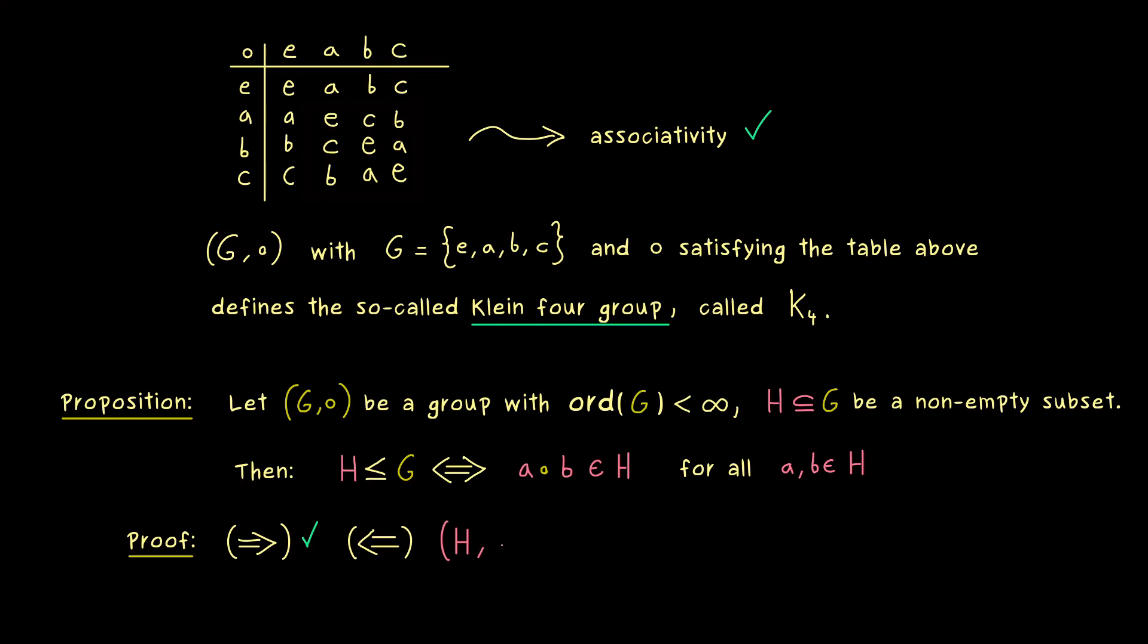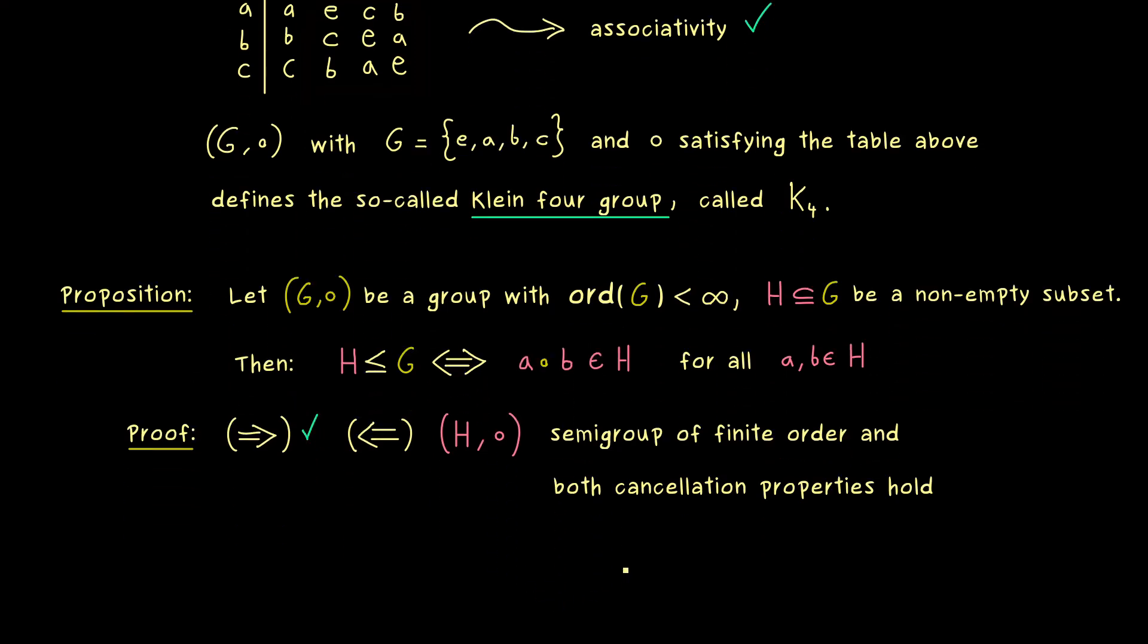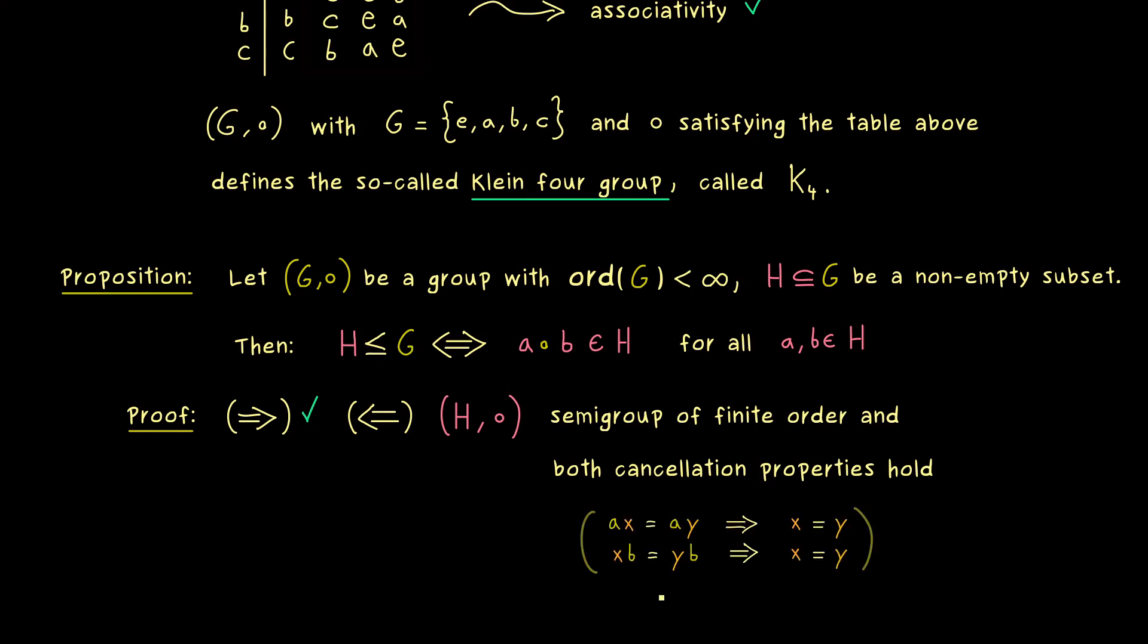So the first conclusion is that H with the binary operation is a semi-group. Since H is a subset in G, it's also of finite order. Moreover, we also get from the group G that both cancellation properties hold as well.